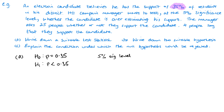Just to note on two-tailed tests: if it's a 5% two-tailed test, it's 2.5% on each side. Now, I realise I answered part B first — the suitable hypotheses — so let's go back to part A: write down a suitable test statistic. The test statistic here would be the number of people who say they support the candidate.